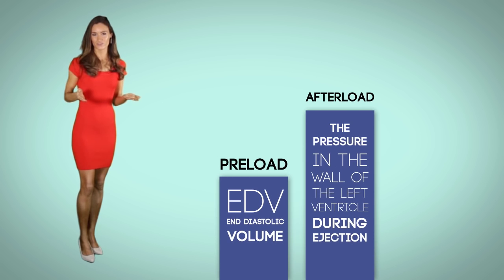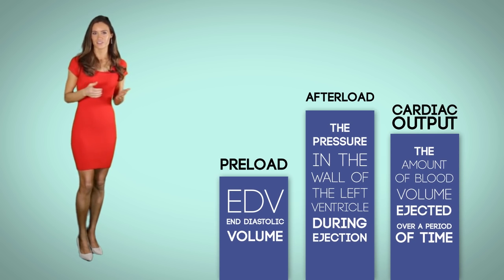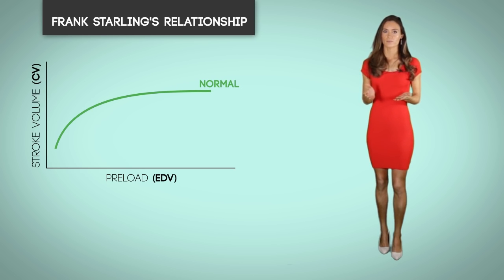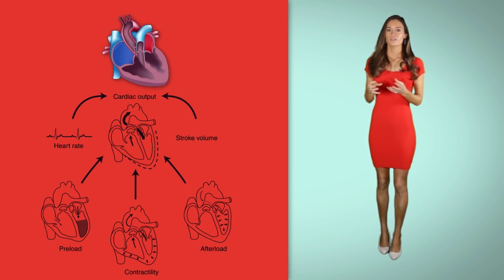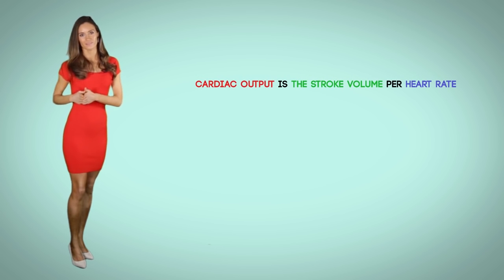Afterload is the pressure in the wall of the left ventricle during ejection. Cardiac output is the amount of blood volume ejected over a period of time. Looking at the chart and a visual demonstration, a normal functioning heart has a normal preload and stroke volume. If the heart has injury, you will see a decrease in preload and stroke volume. In this visual demonstration, the stroke volume of the heart increases in response to an increase in the volume of blood filling the heart — the preload, also known as end-diastolic volume. Cardiac output equals stroke volume times heart rate.